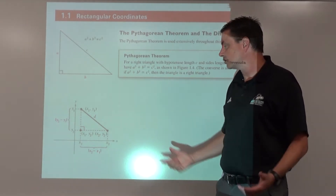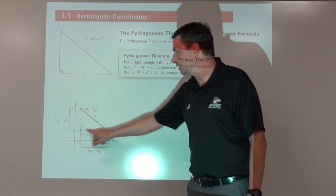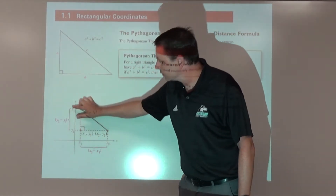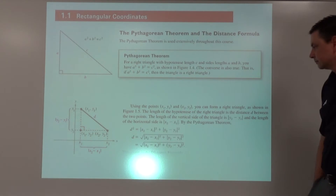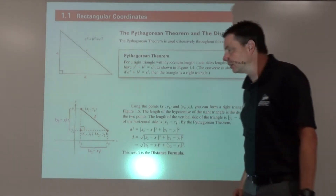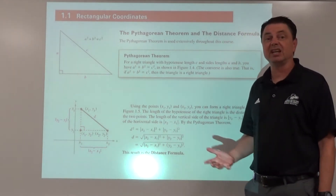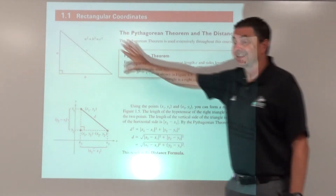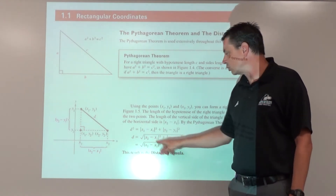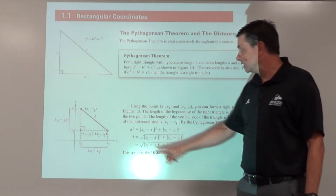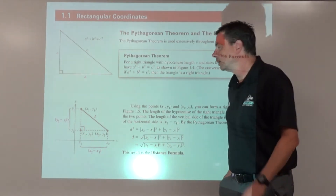We can find those lengths with the coordinates. For example, to find this length you just subtract the x coordinates, and to find this length we're just going to subtract the y coordinates. If we go through the Pythagorean theorem, that takes us to the distance formula, which is one of the top ten mathematical formulas we should know. The distance of a segment is the square root of the difference in the x coordinates squared plus the difference in the y coordinates squared.